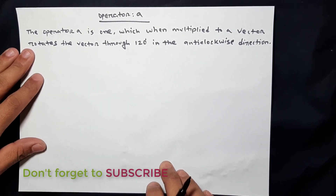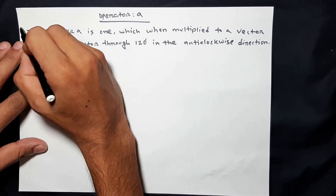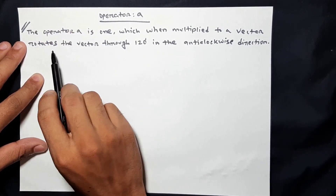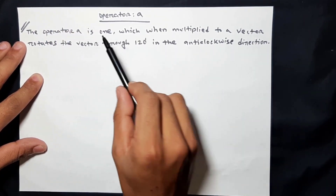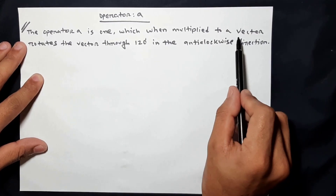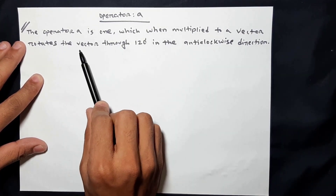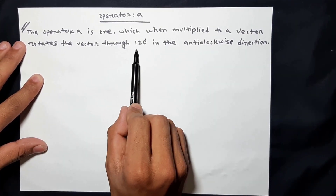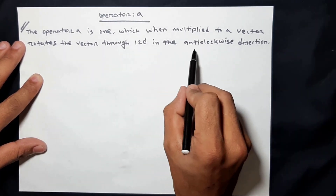The operator A is 1, which when multiplied to a vector, rotates the vector through 120 degrees in the anticlockwise direction.